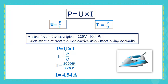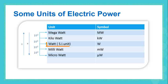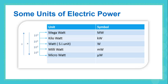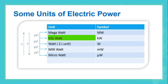The SI unit of electric power is the watt, but electric power can also be expressed in other units such as megawatt, kilowatt, milliwatt, and microwatt. To convert from one unit to another, we either multiply or divide by 1000, depending on the units. To convert megawatts to kilowatts, we multiply by 1000. To convert kilowatts to megawatts, we divide by 1000.